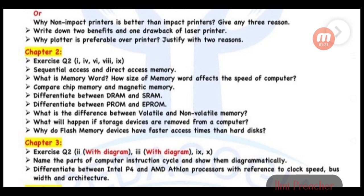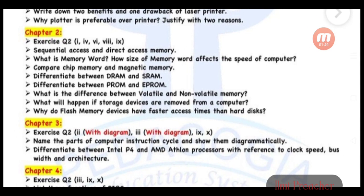Chapter 2, Exercise question 2: parts 1, 4, 6, 8, and 9. Sequential access and direct access memory. What is memory word? How does size of memory word affect the speed of computer? Compare chip memory and magnetic memory. Differentiate between DRAM and SRAM. Differentiate between PROM and EPROM. What is the difference between volatile and non-volatile memory? What will happen if storage devices are removed from a computer? Why do flash memory devices have faster access time than hard disks?